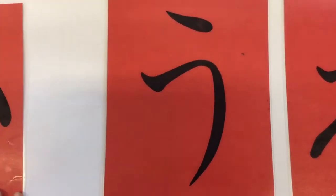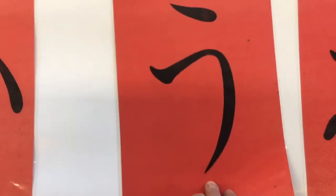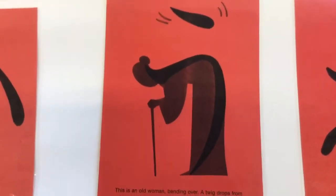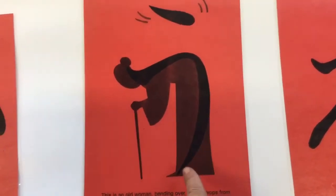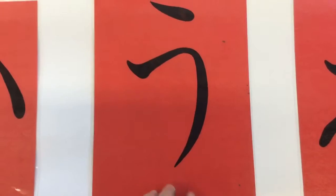This is the letter O. It looks like an old lady bent over and a stick is falling out of the tree on her back. There's the old lady. There's the stick falling down. She says, 'OO, OO, I hurt my back.' This is the letter O.